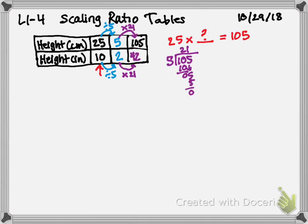So what I'm saying is that 105 centimeters is the same as 42 inches. I scaled back — meaning I scaled down by dividing by 5 — and then with the new numbers 5 and 2, I scaled up by multiplying by 21 to get to my final answer. Let's write that down.